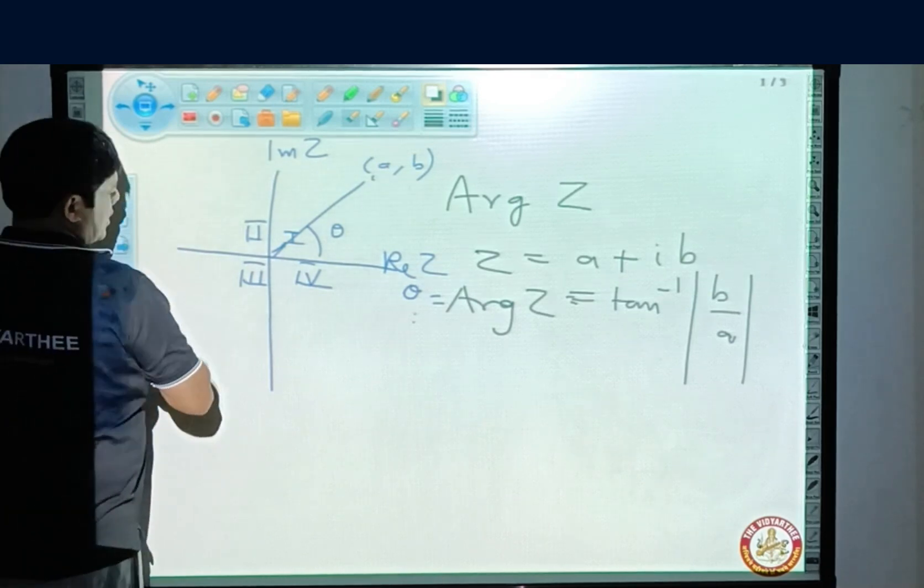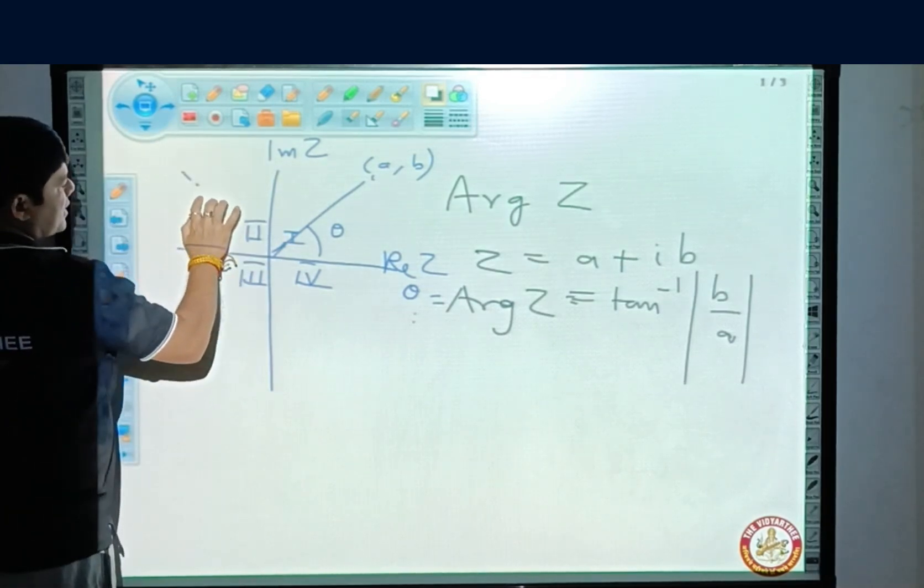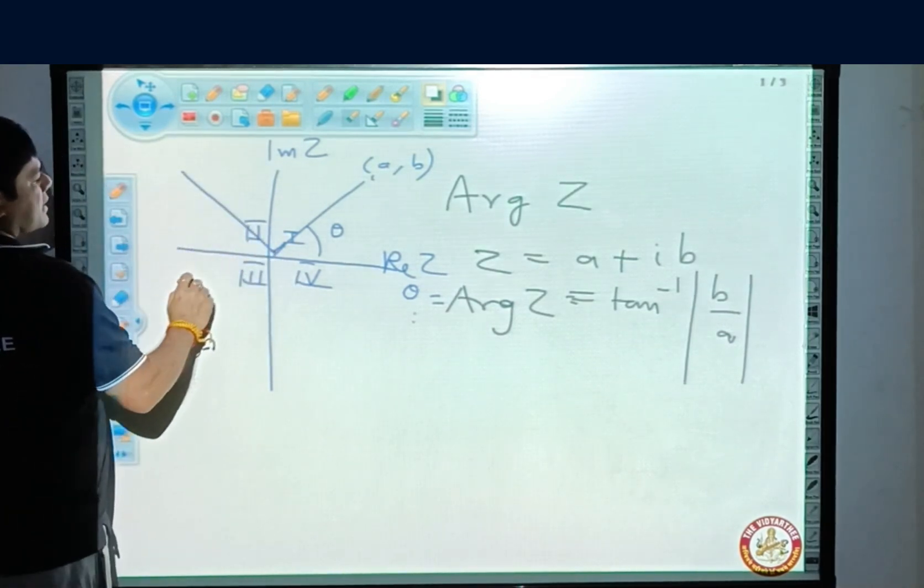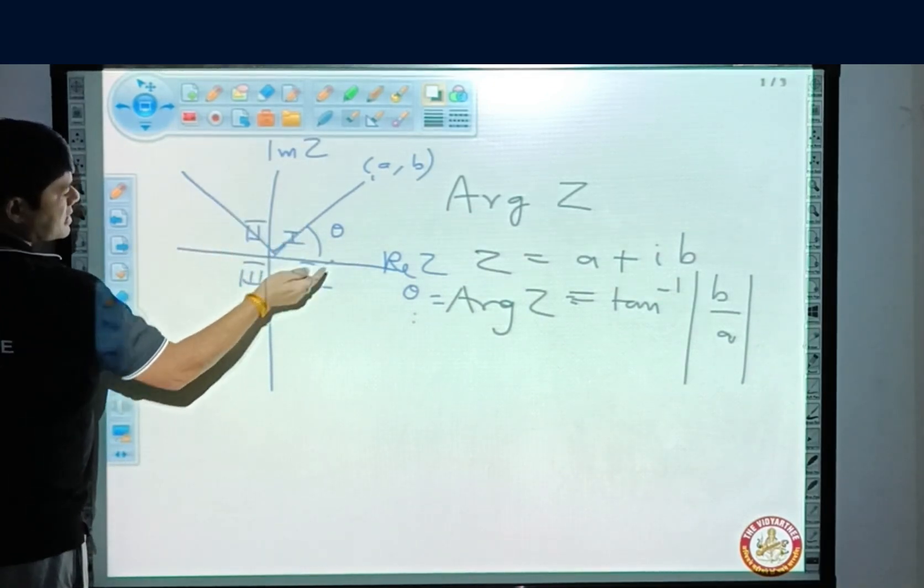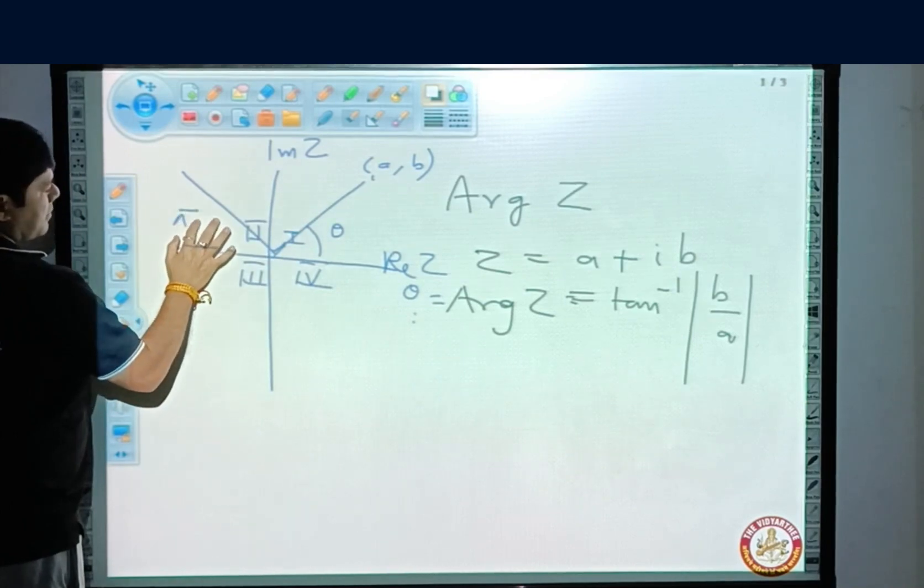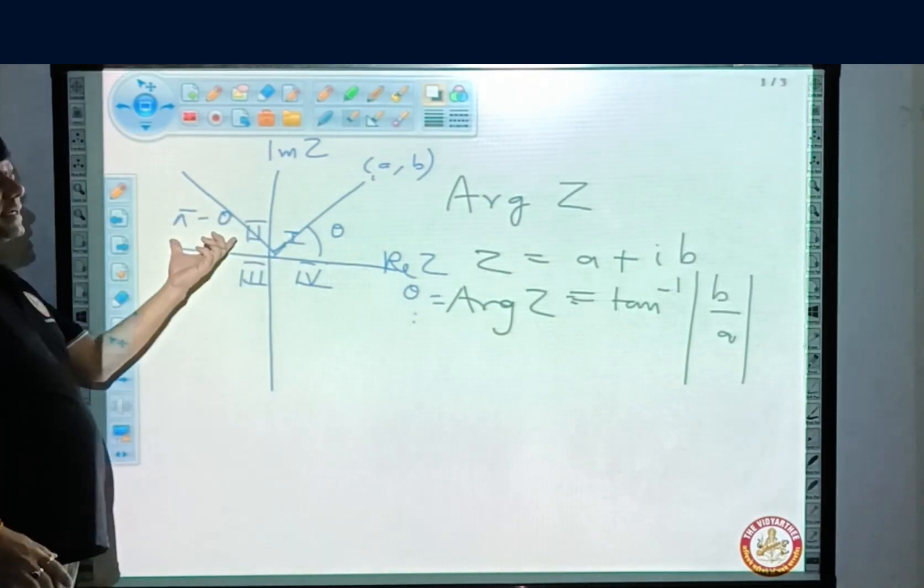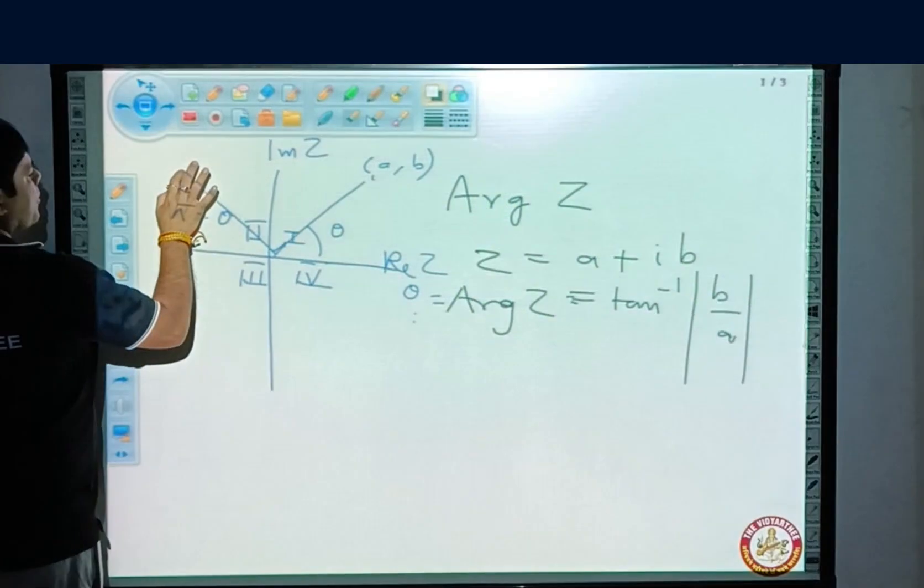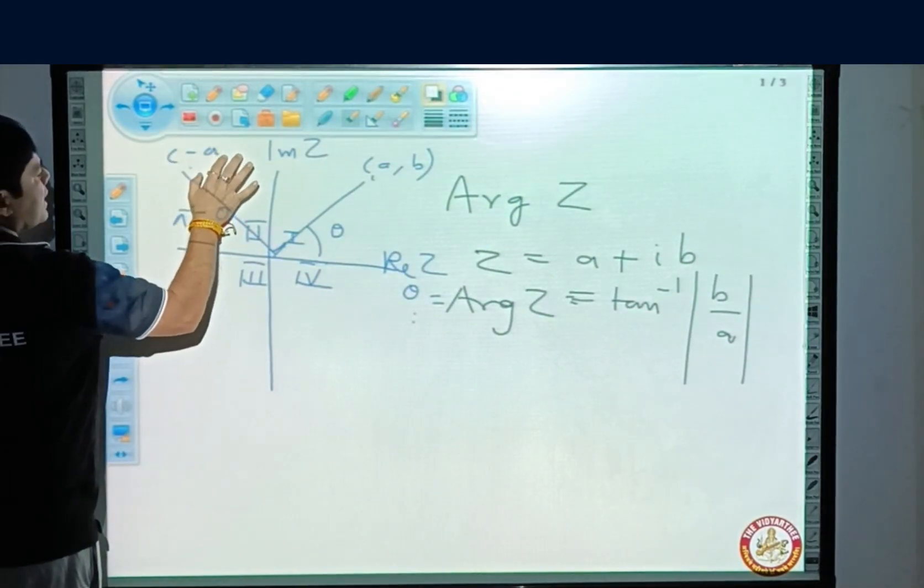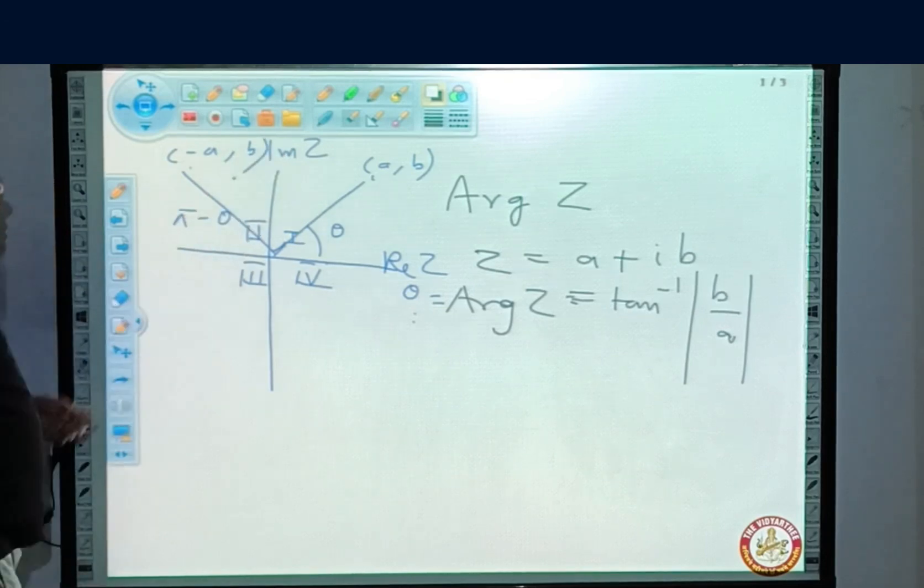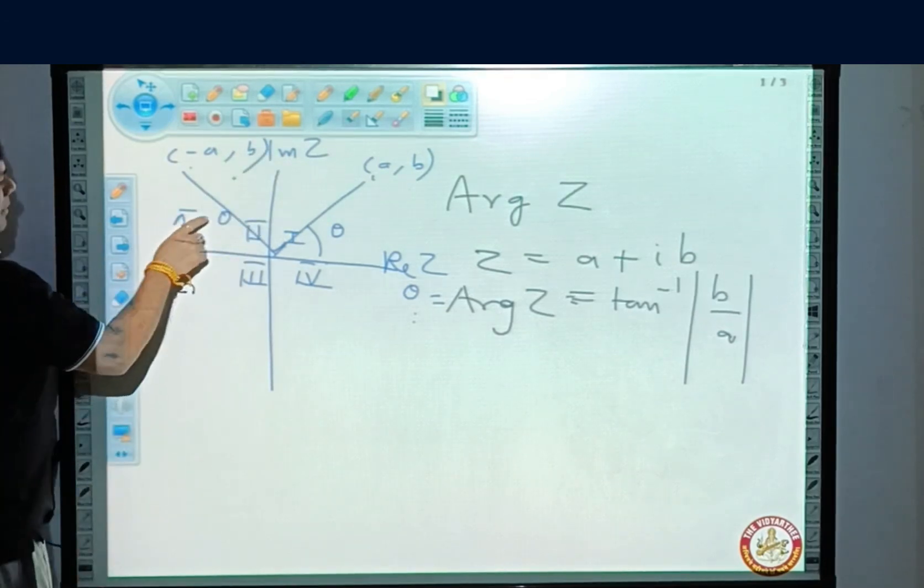If it is in the second quadrant, the argument will be pi minus theta. So if it is in the second quadrant and your points are minus a, comma b, then the argument will be pi minus theta.